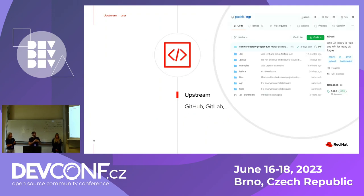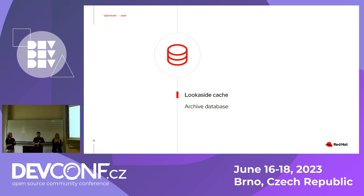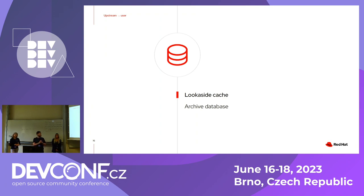In the upstream someone develops and releases versions, and then someone needs to get them to the downstream. Of course, there are many Linux distributions, each with a different way of building packages. In our case we will talk about RPM-based distributions. We have something called the lookaside cache — when someone releases a new version, we take the sources needed to build the RPM and upload them to the lookaside cache.